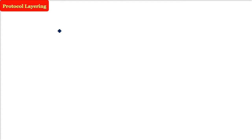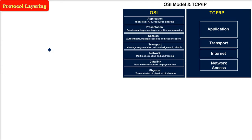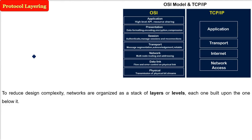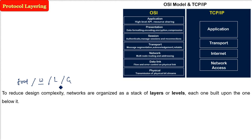Protocol layering is the best idea for defining a network using layers and protocols. The network design can be very complex, and the best way to reduce this complexity is to divide the network into a properly arranged, organized stack of layers - each one above another. Like organizing a party by assigning tasks to different people, this reduces overall complexity.